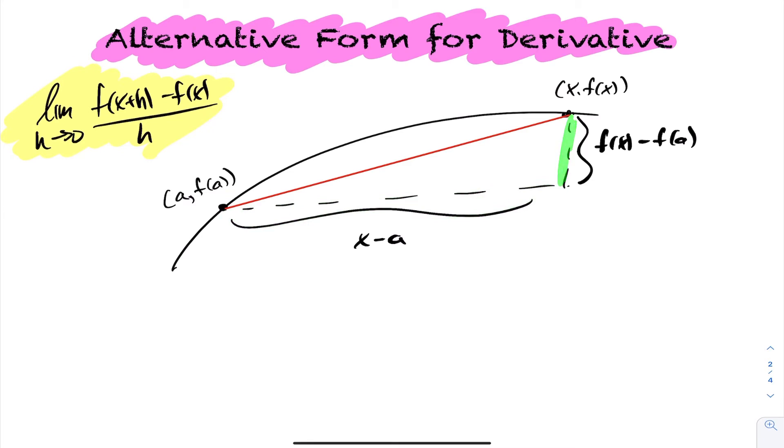f(x) minus f(a) would be the distance of this line segment. Therefore, the slope at that exact point (a, f(a)) would be the limit as x approaches a of f(x) minus f(a) over x minus a.